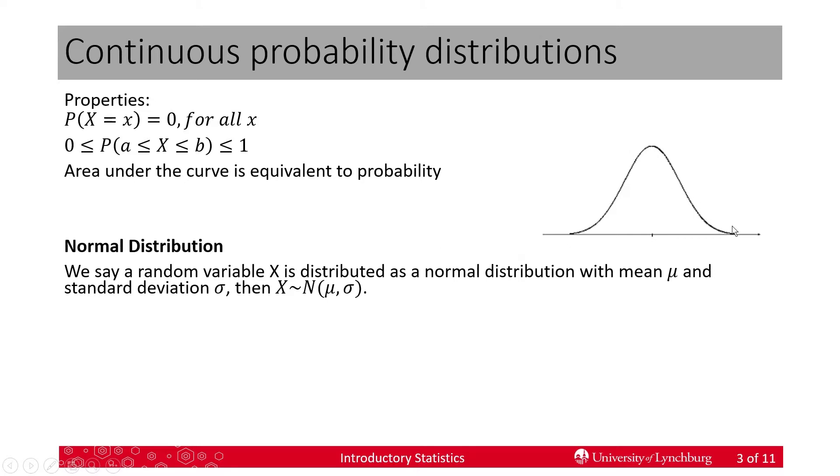This is a picture of a normal distribution. And we say that x is distributed as a normal distribution with mean mu, standard deviation sigma, we can write that as x tilde n. So, we read this as x, distributed as normal, mean mu, standard deviation sigma. And remember, these are going to be replaced with numbers.